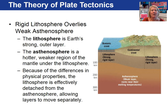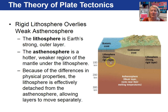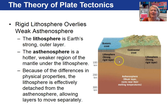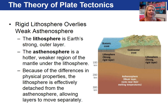In plate tectonics, we distinguish ocean crust and continental crust — ocean crust is thin compared to continental crust. The lithosphere is a physical layer of the Earth that encompasses all of the crust, whether oceanic or continental, along with the uppermost mantle, and is described as a strong, rigid layer. Existing below the lithosphere is a weaker layer called the asthenosphere. Because of the different physical characteristics of the lithosphere and asthenosphere, you can imagine them being effectively detached from one another, allowing the layers to move independently.